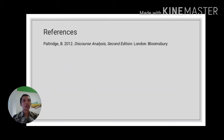This is the end of our discussion about the three parts — reference, lexical cohesion, and collocation — that can be used to create cohesion inside discourse. Keep learning discourse analysis. See you later, and thank you very much.